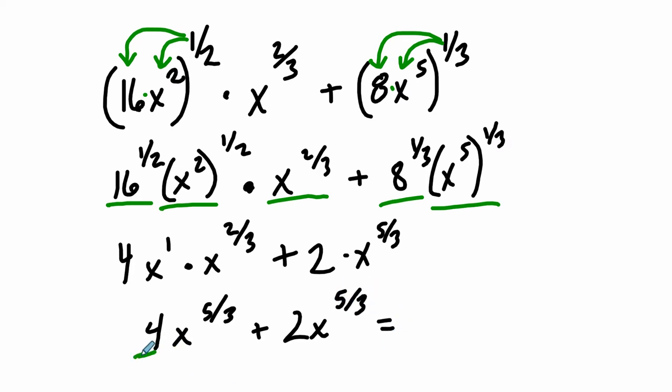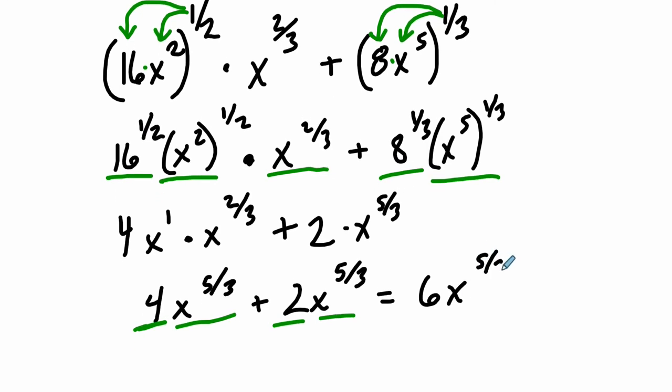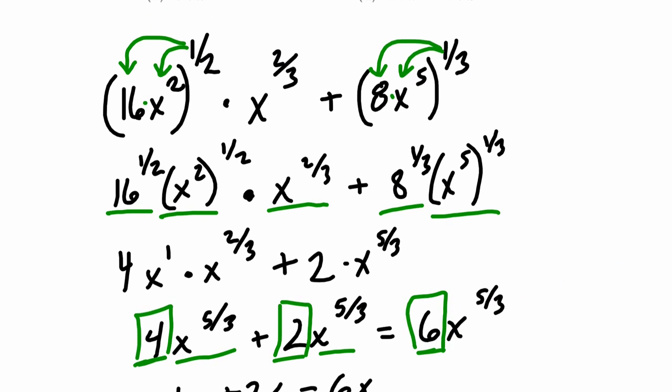Well, this is saying we have 4 groups of x to the 5/3. And then 2 more groups of x to the 5/3. So altogether we have 6 groups of x to the 5/3, right? It's something like if you have, let's say, just 4x plus 2x. Same idea. You have 4 groups of x plus 2 groups of x. And that's 6 groups of x. The same idea is happening right here. You have 4 groups and 2 groups of x to the 5th. So you have 6 groups of them all together.